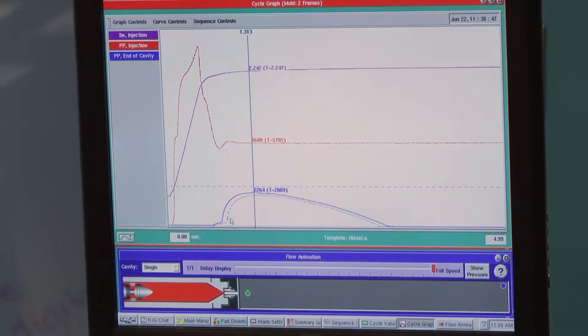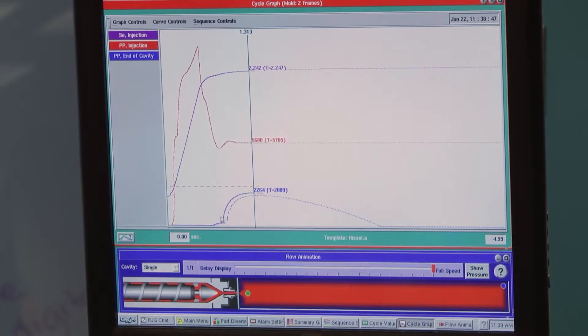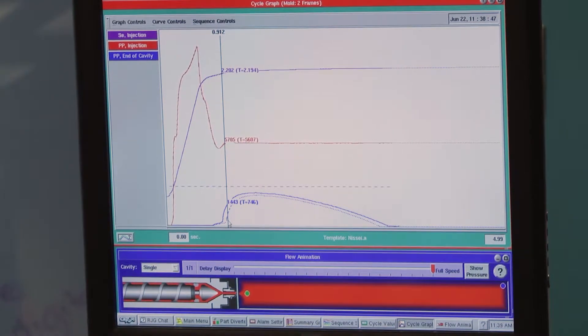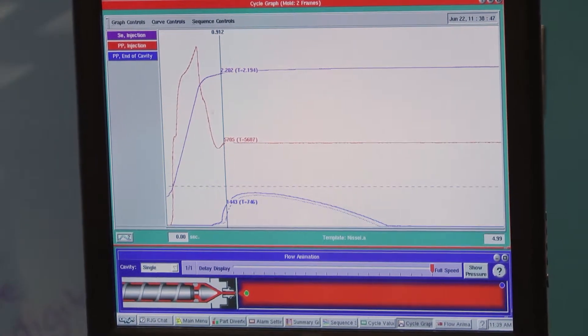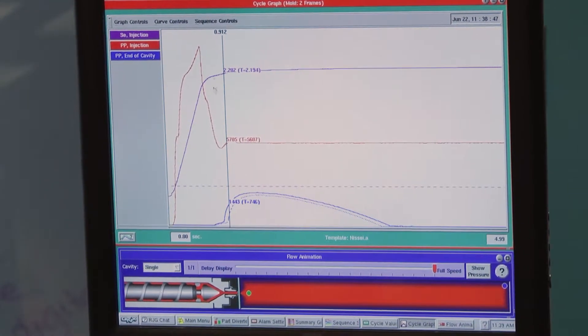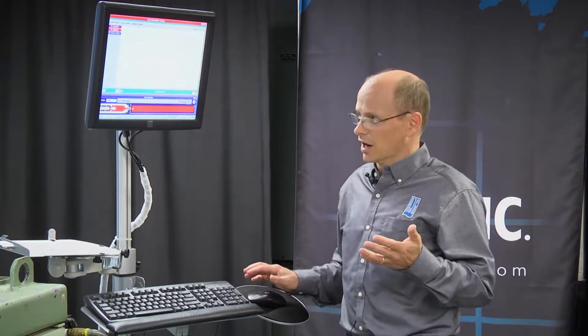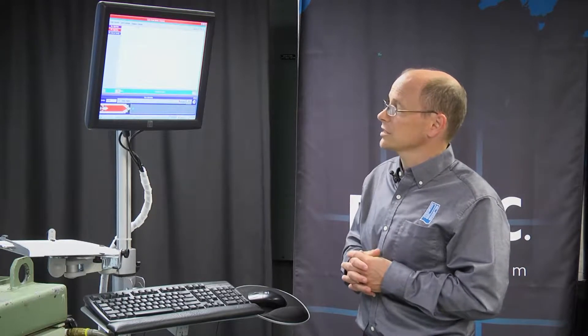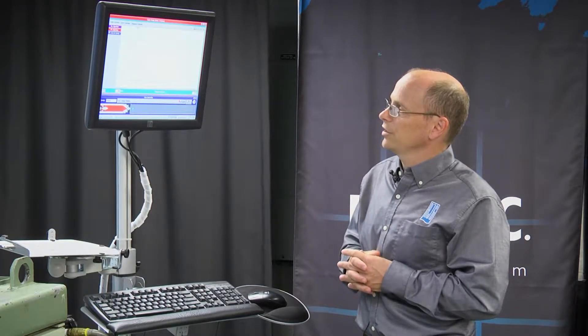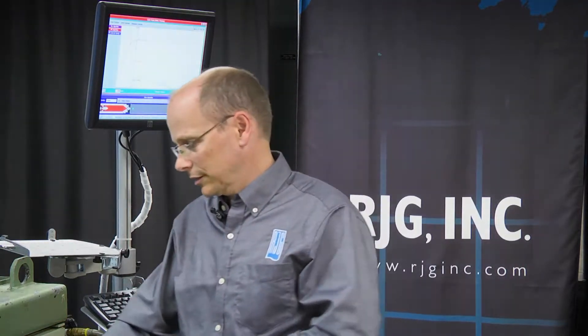The first thing is what we call the cavity fill time, the time it takes to hit the end of the cavity. You'll notice that we're not quite matching the template, even though the machine is matching perfectly. So let's go ahead and just make a couple adjustments to the press so we can see the effect on here.